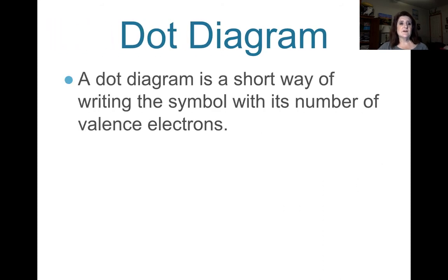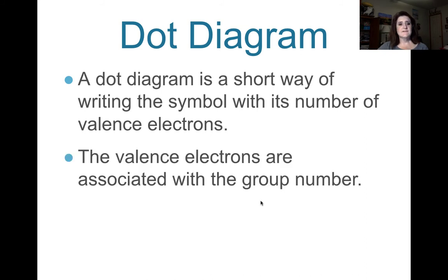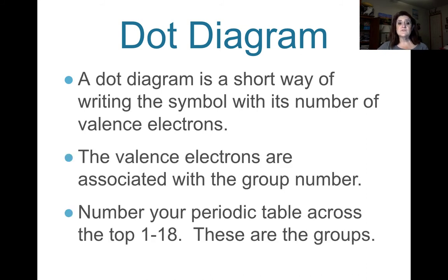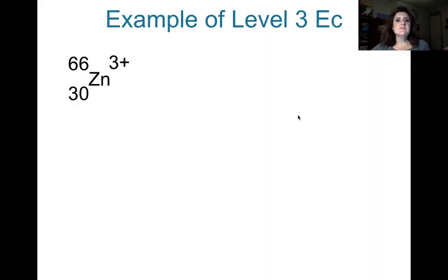Finally, we have a dot diagram, and a dot diagram is a short way of writing the symbol with its valence electrons. The valence electrons are, remember, associated with the group. You numbered 1 through 18. Those are your group numbers, right? And you put the valence above them. So let's look at an example that we did before.